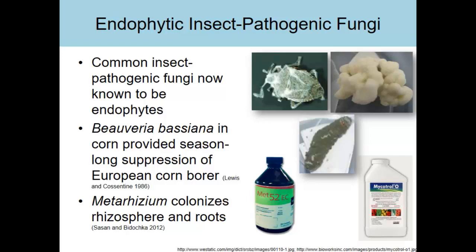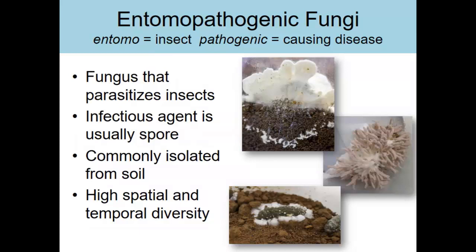Since around 2012, it was discovered that Metarhizium — the green fungus — colonizes both the rhizosphere of plants and can grow into the roots and throughout the whole plant. These fungi, both Beauveria and Metarhizium, have been studied for a long time as insect pathogens. In fact, you can get commercial formulations: for Metarhizium there's a product called Met 52, and Beauveria bassiana is Microtrol. So we've understood them as insect pathogens for a long time.